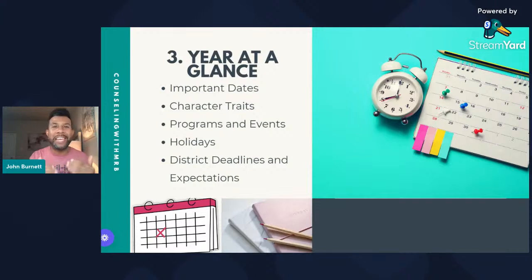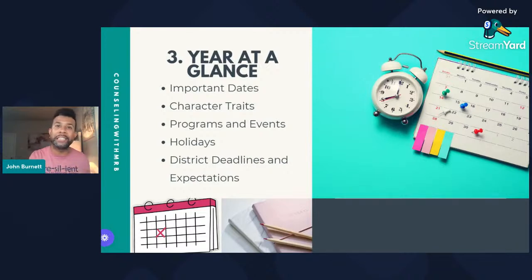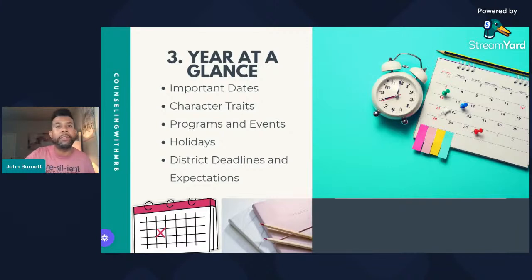Tip three is creating a year at a glance. When creating your year at a glance, you want to think about your important dates — holidays, due dates, character traits — and if you choose to incorporate method one, you can do one and three at the same time. You also factor in programs, events, interventions, holidays, district deadlines, and expectations — like four-year plans for eighth graders or fifth-grade transition. Let me show you an example.